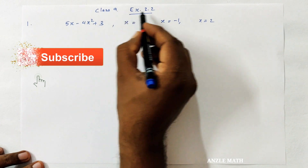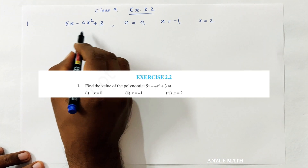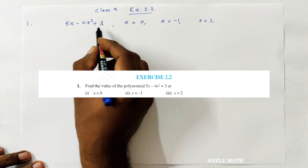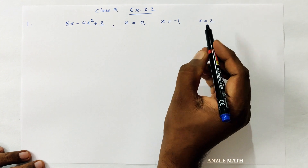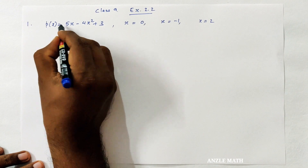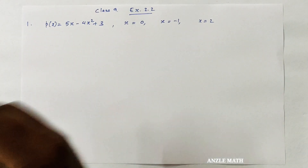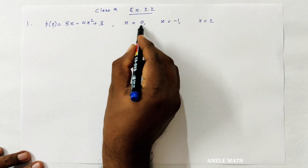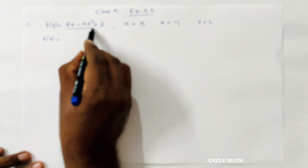This is a question for exercise 2.2. Find the value of the polynomial p(x) at given values. If you want to make a question, you can ask about p(x). This polynomial p(x) is equal to...